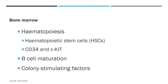Bone marrow generates not just immune cells but all blood cells. The term for that generation of blood cells is hematopoiesis, and the cells generated at this stage are called hematopoietic stem cells, or HSCs. A way to recognize HSCs in our samples is through the detection of proteins called CD34 and CKIT — those are the molecular markers. These are precursors to all the immune cells we've talked about, and in the context of immunity, bone marrow is also an important site for B cell maturation.